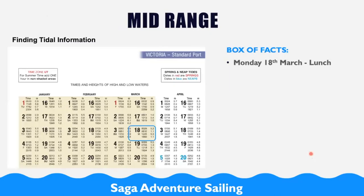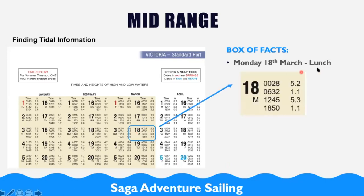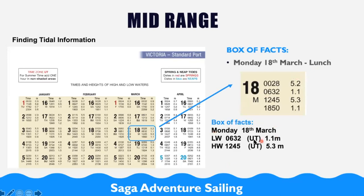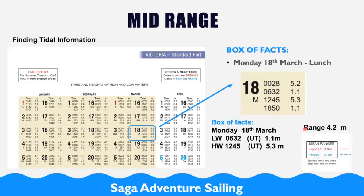That was easy because the numbers were there in the tidal diamond and atlas. But when we have mid-range — a situation where we are neither at springs nor at neaps — it takes a little more to find the tidal stream. Let's say we want to travel on the 18th of March. You do your box of facts, write everything down, don't forget to put the time zones. Calculate the range — the range is 4.2. The spring range is 4.9; we are less than 4.9, so that means we are mid-range.